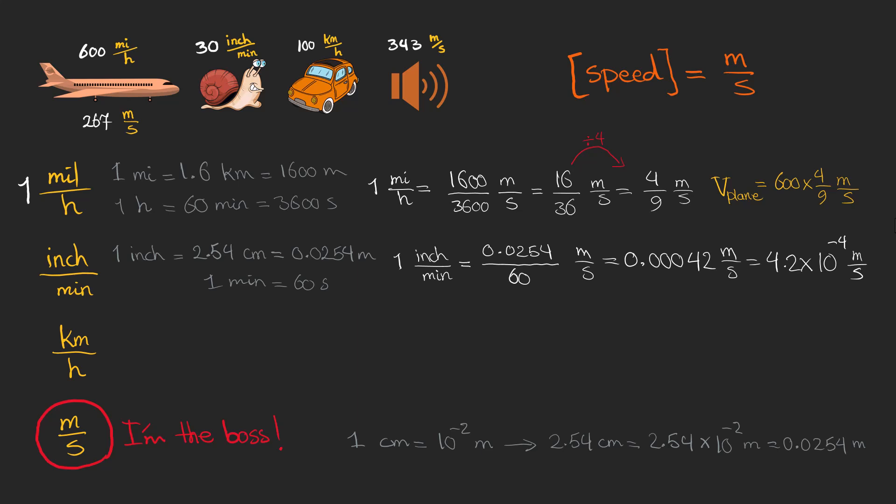So 1 inch per minute can be written as 0.00042 meters per second or in scientific notation as 4.2 times 10 to the power of minus 4 meters per second. So the speed of a snail is 1.26 times 10 to the power of minus 2 meters per second.